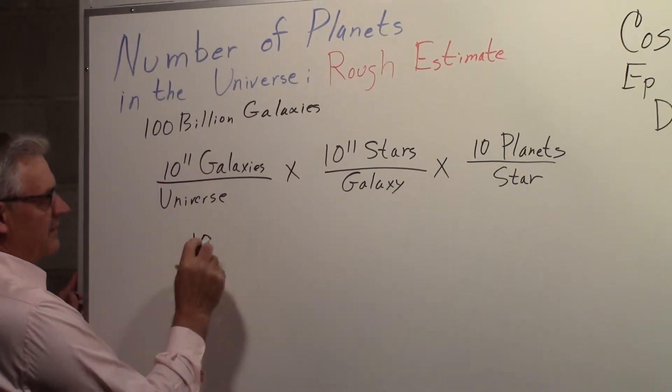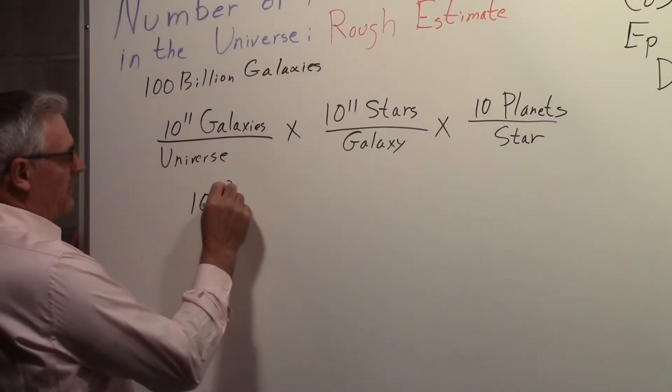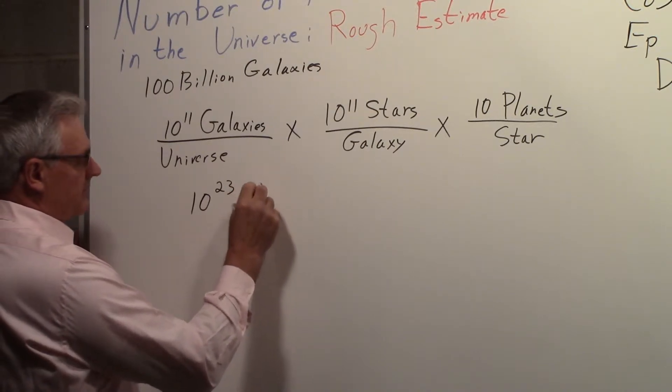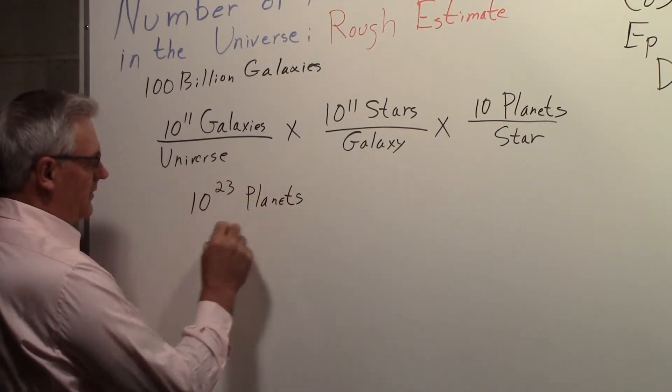We would find that we have ten to the twenty-three planets in the universe.